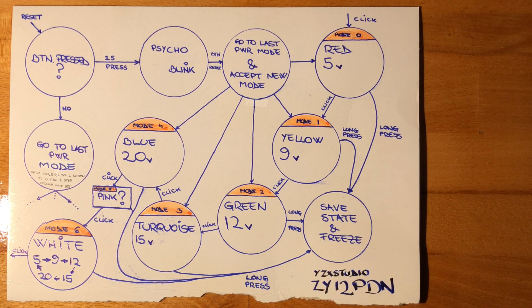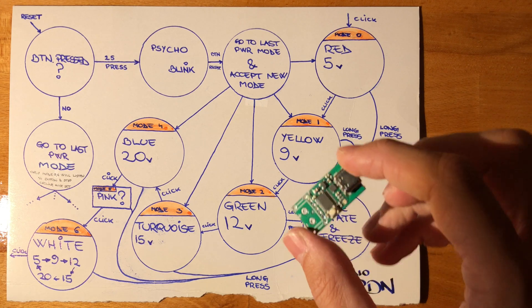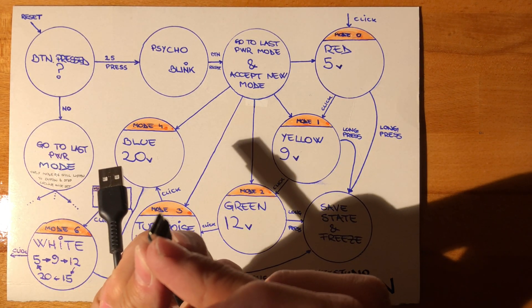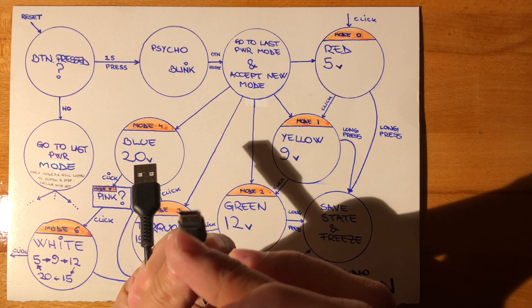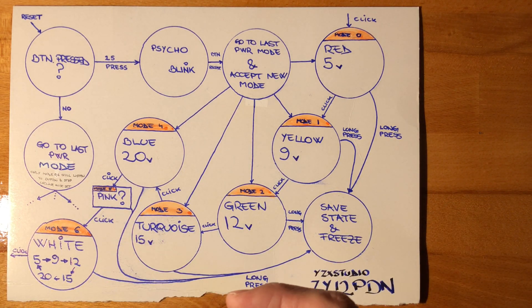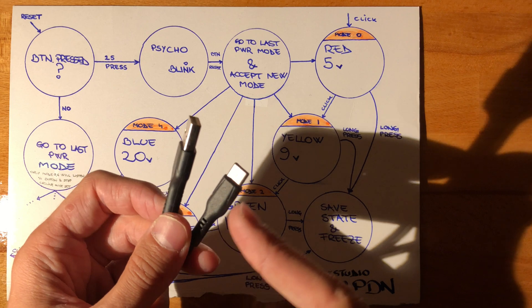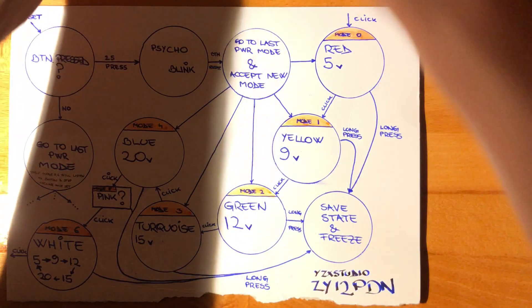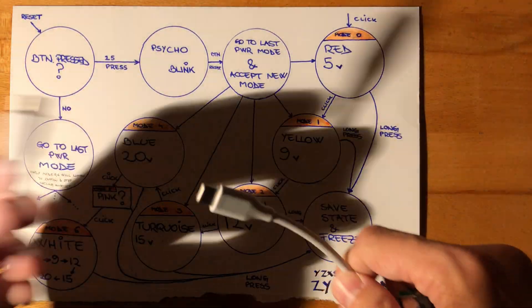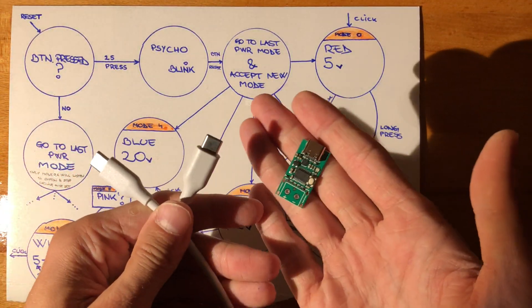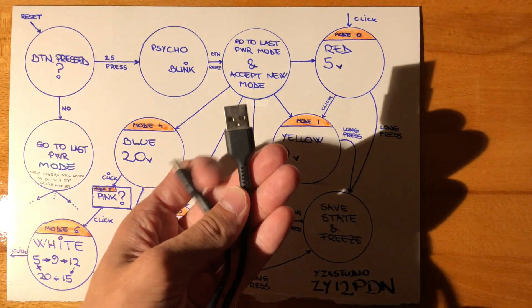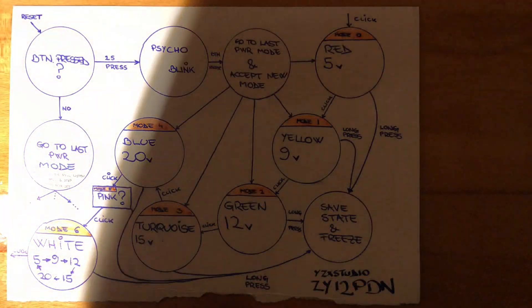Right off the bat, you need to know that power delivery runs over the channel configuration lines of the Type-C connector, and these are not present on any Type-A to Type-C wires. So you definitely need a Type-C to Type-C cable to use power delivery, just how it is.